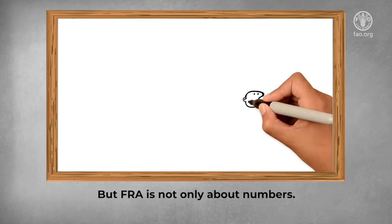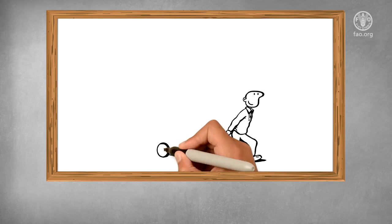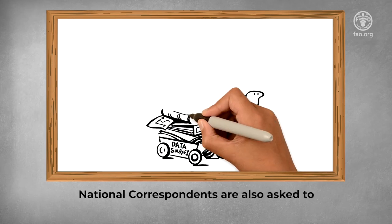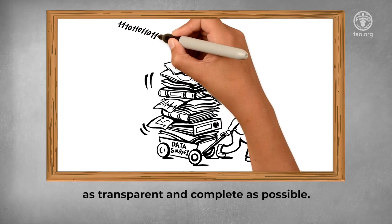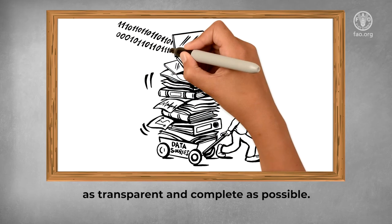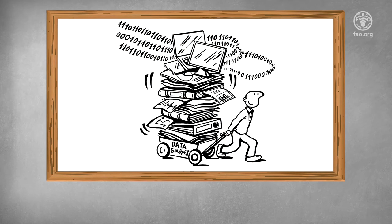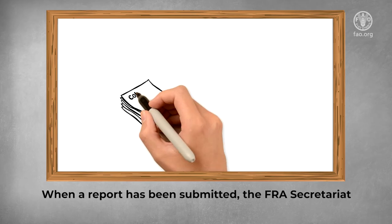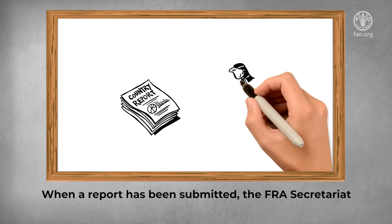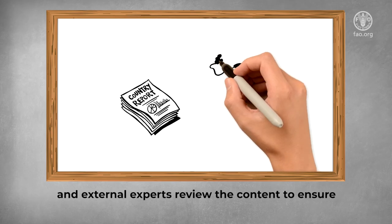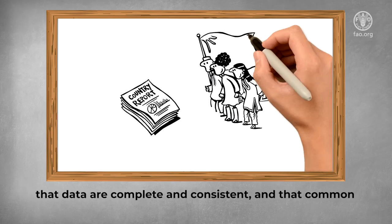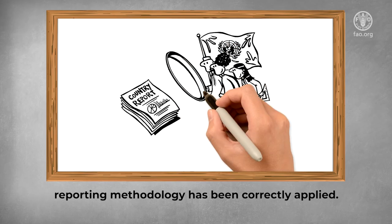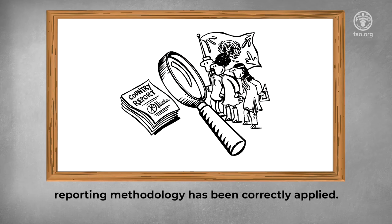But FRA is not only about numbers. National correspondents are also asked to thoroughly document all the data sources they have used to make the country reports as transparent and complete as possible. When a report has been submitted, the FRA secretariat and external experts review the content to ensure that data are complete and consistent, and that common reporting methodology has been correctly applied.